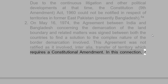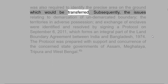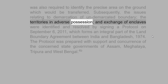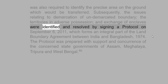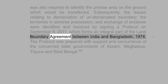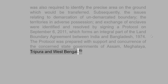On 16 May 1974, the agreement between India and Bangladesh concerning the demarcation of the land boundary and related matters was signed between both countries to find a solution to the complex nature of the border demarcation involved. This agreement was not ratified as it involved, inter alia, transfer of territory which requires a constitutional amendment. Subsequently, the issues relating to demarcation of undemarcated boundary, the territories in adverse possession, and exchange of enclaves were identified and resolved by signing a protocol on 6th September 2011, which forms an integral part of the land boundary agreement between India and Bangladesh, 1974. The protocol was prepared with support and concurrence of the concerned state governments of Assam, Meghalaya, Tripura and West Bengal.